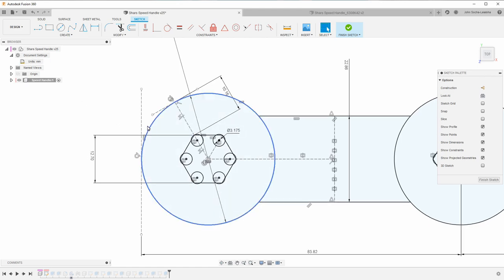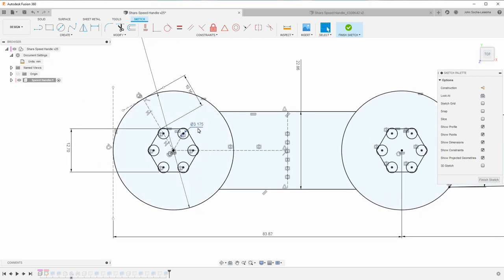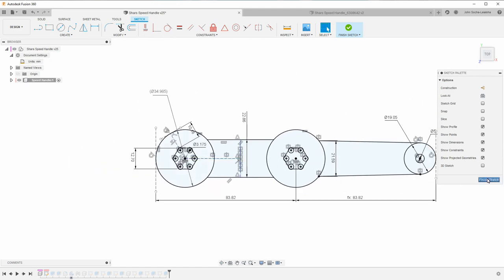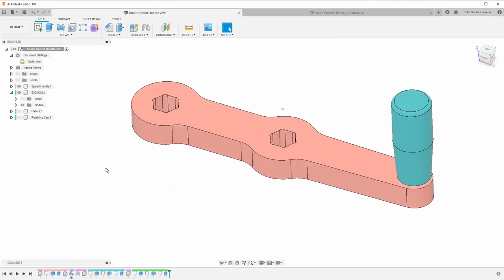Currently, I'm showing millimeters, so that's why it says 3.175. Anyway, this is a fairly straightforward design.